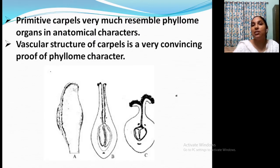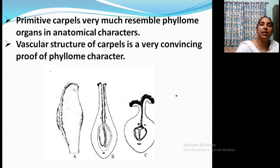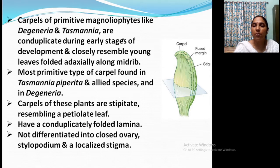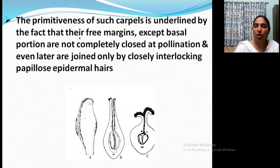Primitive carpels of primitive magnoliophytes like Degeneria resemble young leaves. The most primitive carpels are found in Degeneria and Tasmania. They are stipitate carpels because they resemble petiolate leaves. They have conduplicated folded lamina and are not differentiated into ovary, style, and stigma. There are three margins — the basal portion not completely closed at pollination, joined later. There are three traces in a carpel: one dorsal and two ventral. Traces refer to vascular supply of vascular bundles. This is clear evidence that the carpel is foliar in origin.